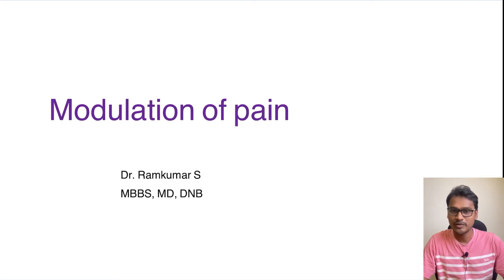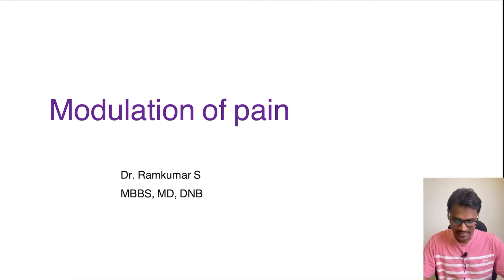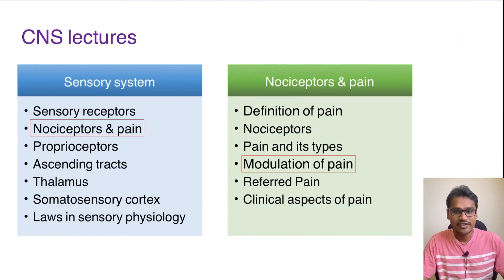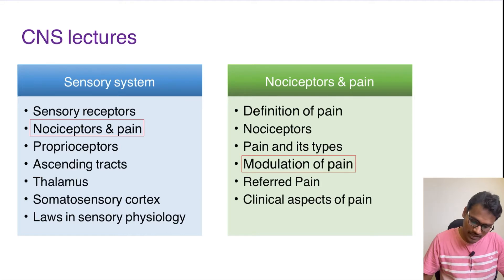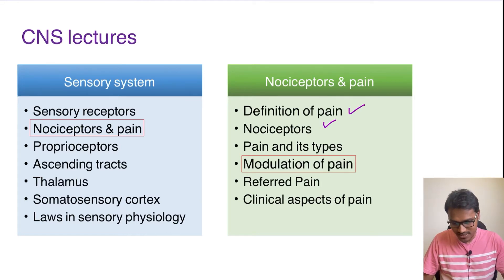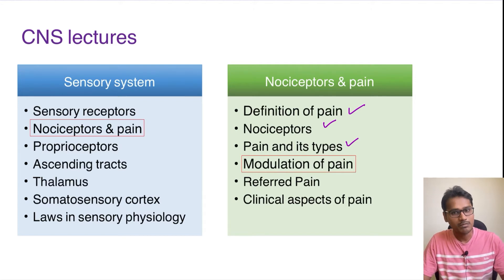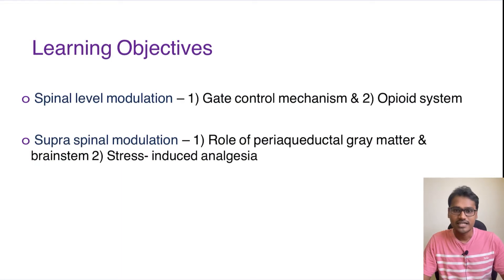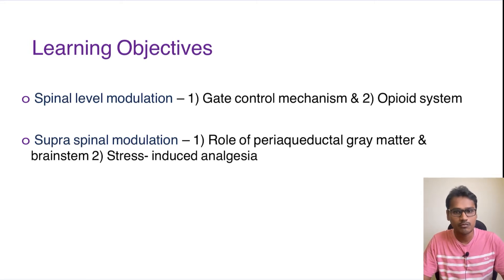Hello everyone, welcome back to my YouTube channel Physiology Learning. In today's discussion we are going to discuss about modulation of pain. In the previous lectures we were discussing about nociceptors and pain, covering definition of pain, nociceptors, and its types. The pain can be modulated at two different levels: one is the spinal level of modulation and another one is the supraspinal level of modulation.